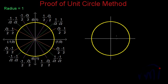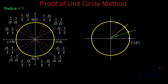We had a circle and then we drew some lines such that this angle was 45 degrees, this angle was 30 degrees, and this angle was 60 degrees. The values of cosine and sine were actually the values of the coordinates of these points. The coordinates of this point were 1 and 0, and the coordinates of this point were 0 and 1. To find the coordinates of these points, we wrote numbers from 1, 2, 3 like this, and then 1, 2, and 3 like this.